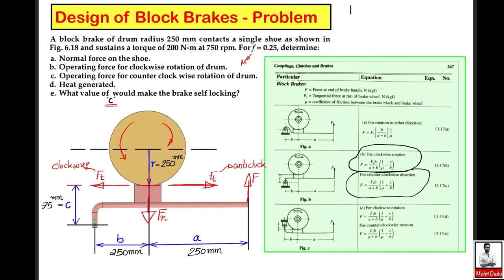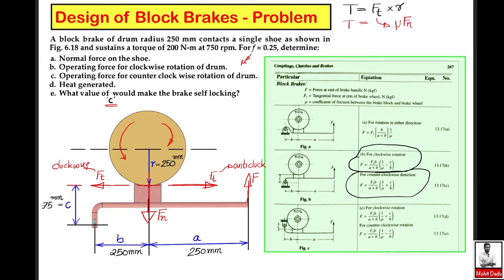In the first part, we evaluate the normal force. The brake torque is given as T = ft × r, because the frictional force acts at the contact surface and the perpendicular distance is to the center of rotation. Since ft = μ × fn, we get T = μ × fn × r. Substituting: 200 = 0.25 × fn × 0.25, which gives fn = 3200 newton.